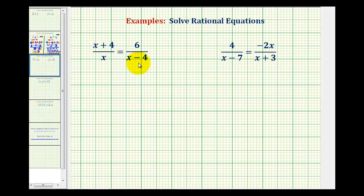When solving a rational equation, the main goal is to determine what expression to multiply both sides of the equation by to eliminate the fractions. And this is going to be the least common denominator or least common multiple of the denominators.